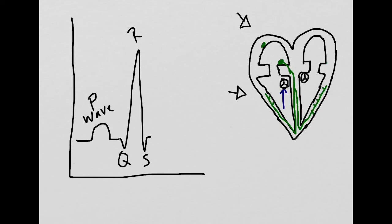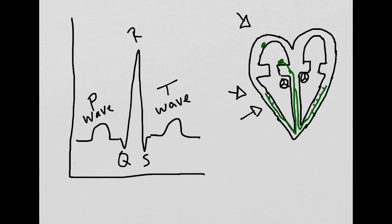The blood is being pushed through the semilunar valves either to the lungs or to the body. The last wave of the EKG is the T wave. During the T wave, the ventricles are being repolarized.